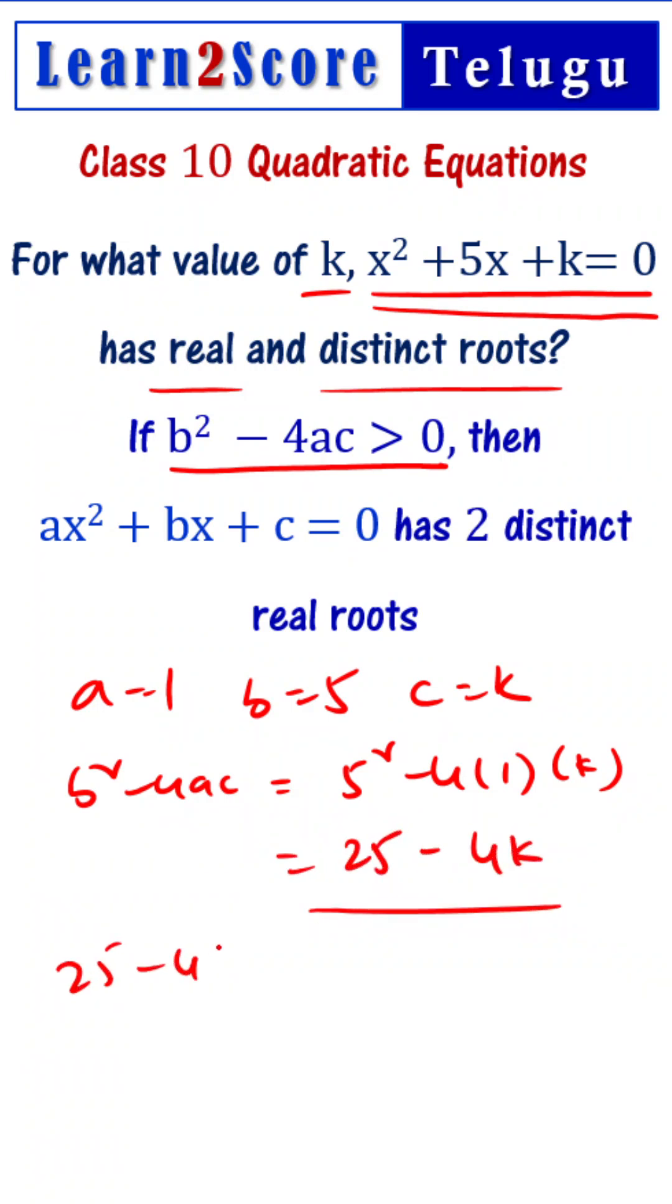25 - 4k greater than 0, then the roots are going to be real and distinct. So 25 is greater than 4k. Then 25 divided by 4 is greater than k.